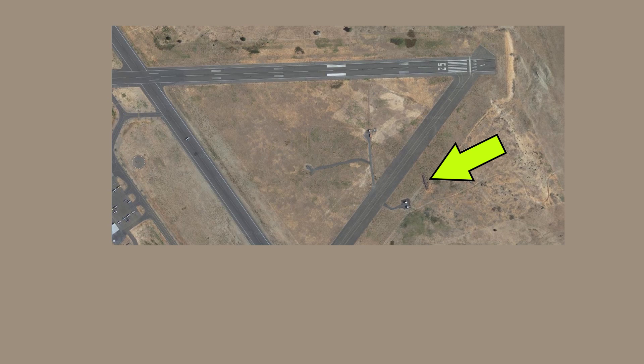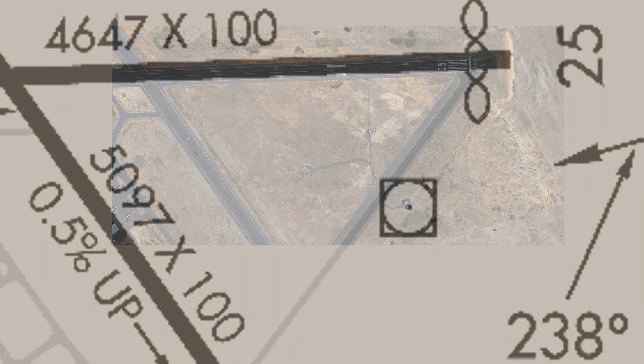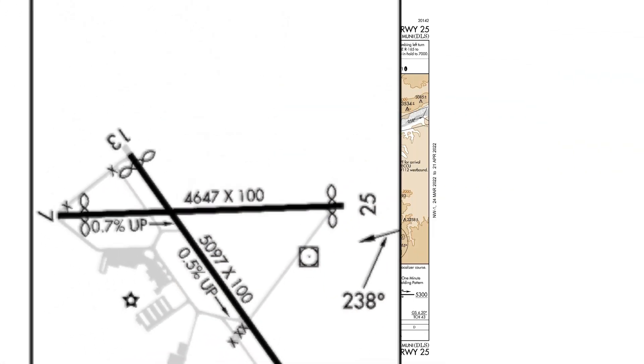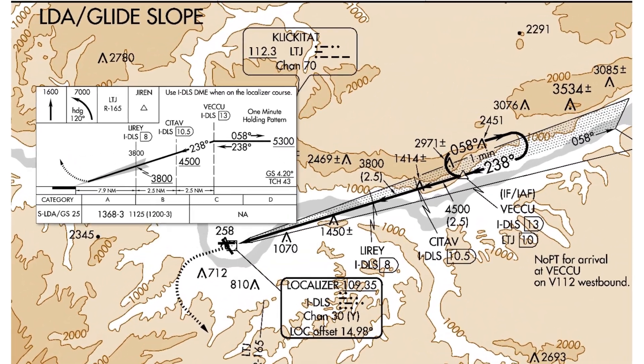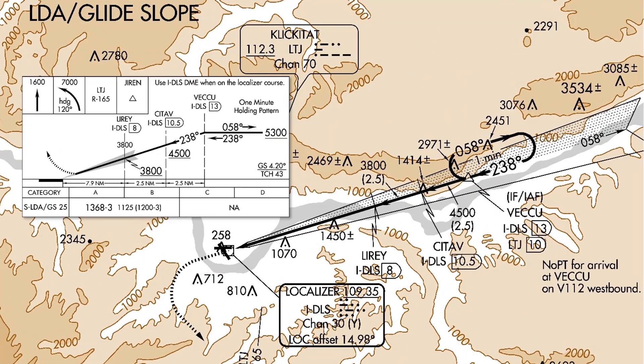In addition to that localizer antenna, there's also a glide slope in the same position. There aren't many LDA approaches — only a couple dozen in the U.S. — but this LDA approach is even more rare because it also incorporates a glide slope antenna. This is definitely not the case with most LDA approaches, but this one will also provide vertical guidance in addition to the lateral.